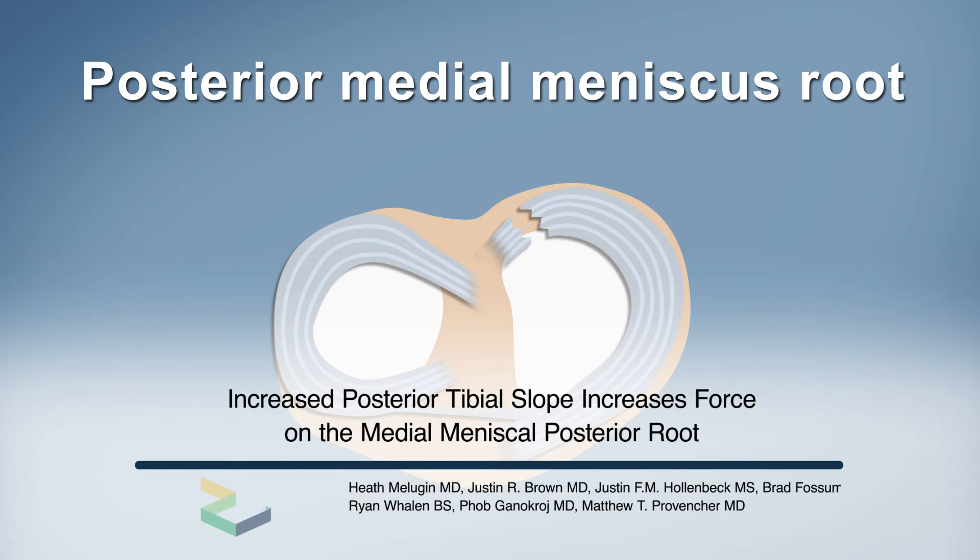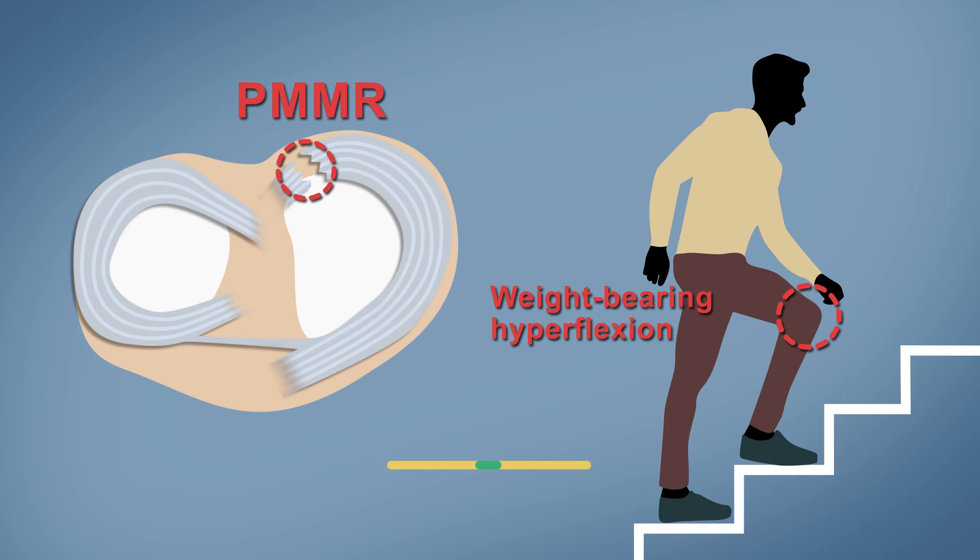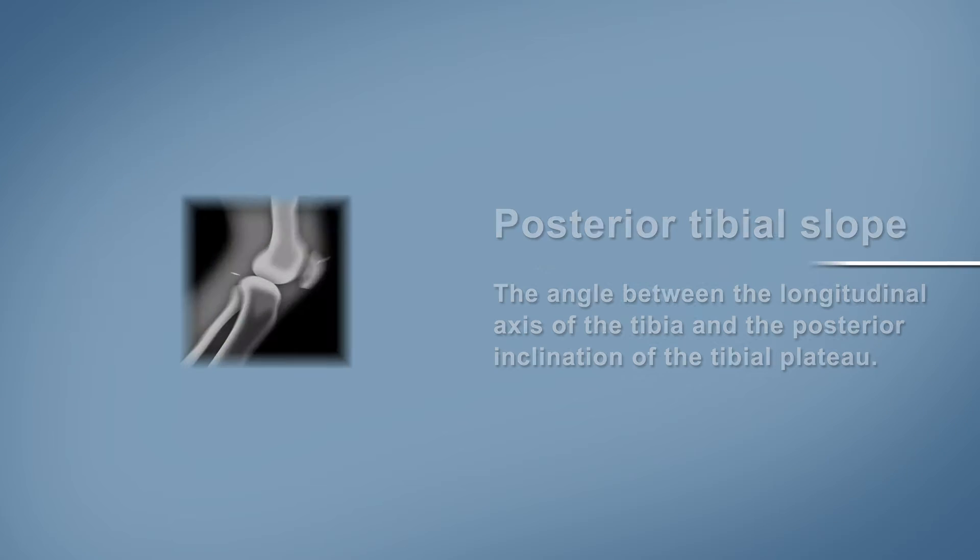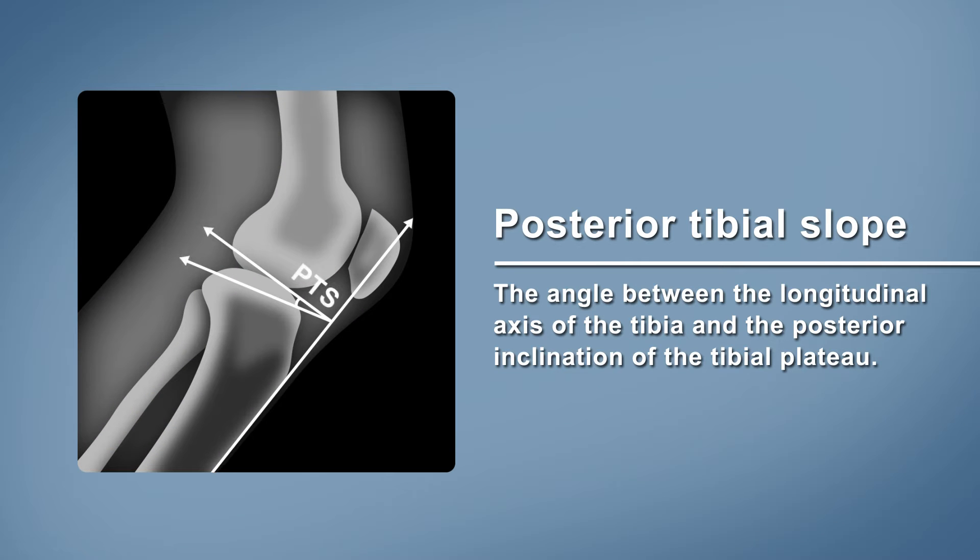Most injuries to the posterior medial meniscus root, or PMMR, are chronic and typically caused by a movement that is seemingly benign when a patient is weight-bearing in a hyperflexed position. Increased posterior tibial slope is an identified risk factor for PMMR tears.